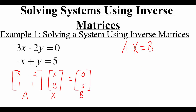Our goal is to solve to get X alone. When solving an algebraic equation, you always use inverse operations. So if I wanted to get rid of this A attached to X right now, I would have to use an inverse matrix. I can move that A over to the other side by making it the inverse of A, and then multiply that by matrix B. That's using an inverse matrix to help us solve this.